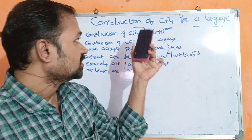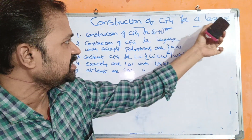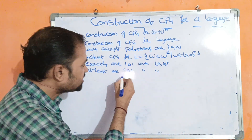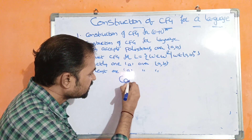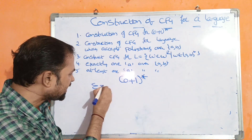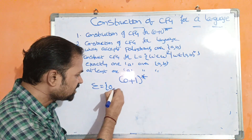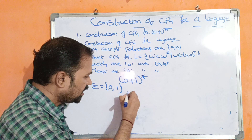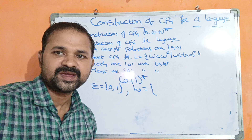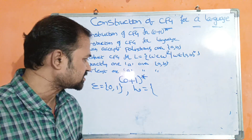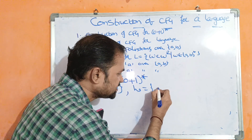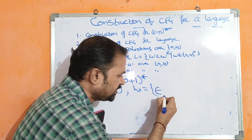Now let us discuss the construction of CFG for these languages. The first example is: construction of CFG for (0+1)*. Here the input alphabet contains two symbols: 0 and 1. The language (0+1)* means any occurrences of any combinations of 0s and 1s. The first string is 0 occurrences — that is epsilon.